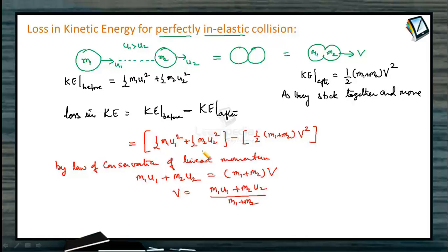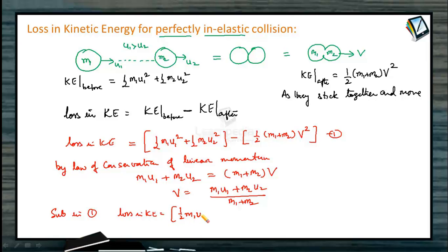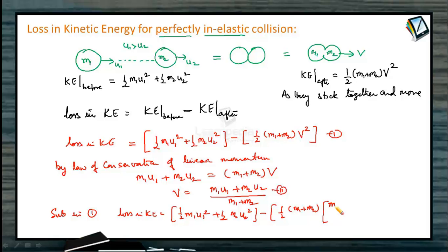Let us substitute this value into the loss equation, which we call equation 1. Loss in kinetic energy equals half of m1 u1 squared plus half of m2 u2 squared, minus half of m1 plus m2 into v squared. Substituting v: minus half of m1 plus m2 into the quantity m1 u1 plus m2 u2 divided by m1 plus m2, whole squared. This is the kinetic energy after collision.